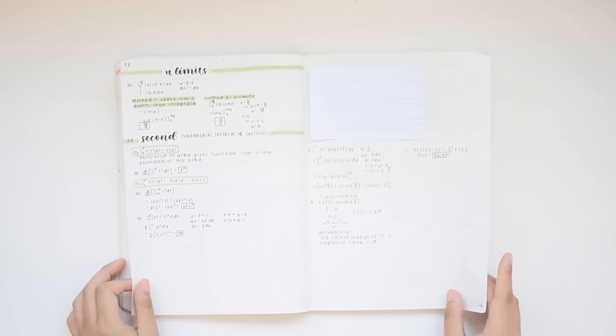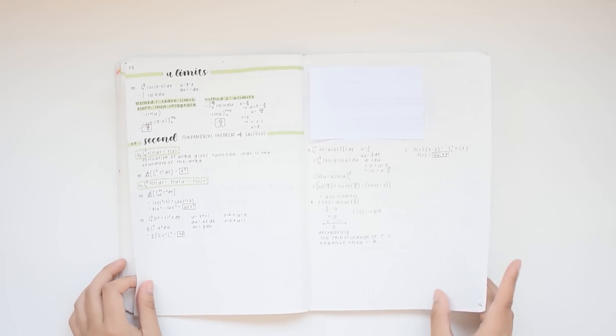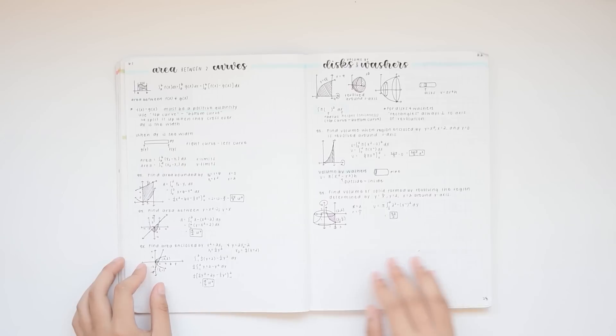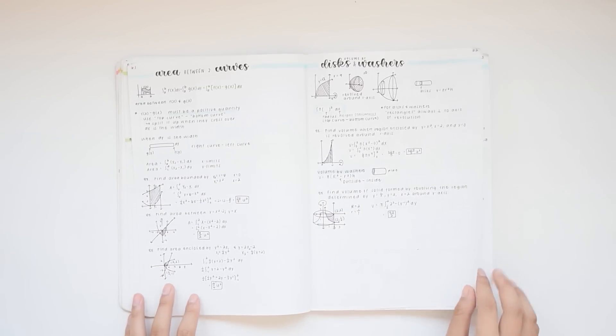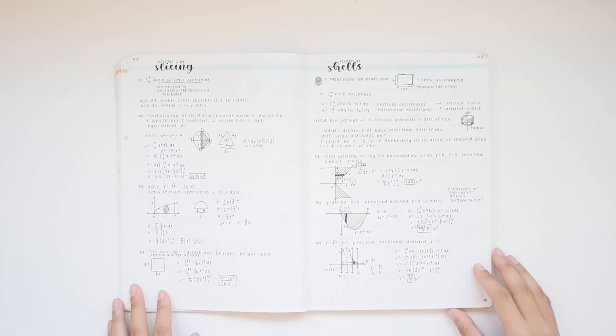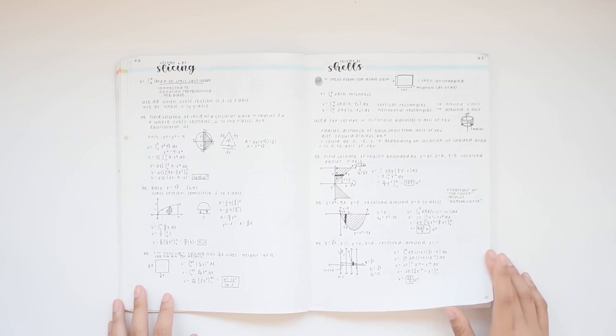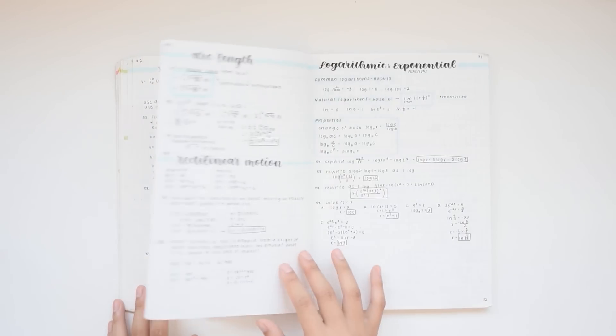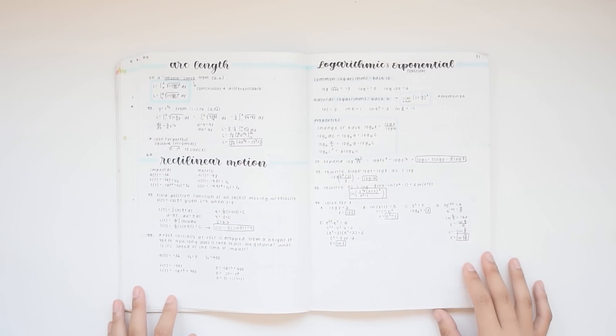You can find mock AP questions online or from prep books, but I recommend you just directly get them from the source which is AP College Board. They have a lot of past exams and the scoring guidelines available for free online on their website. I'll link it in the description.